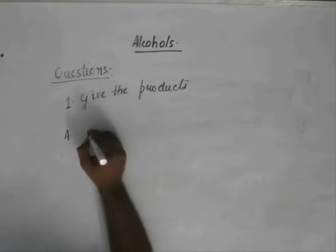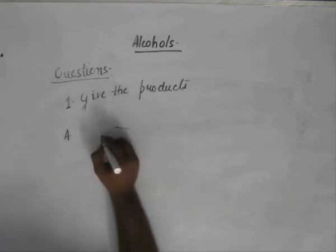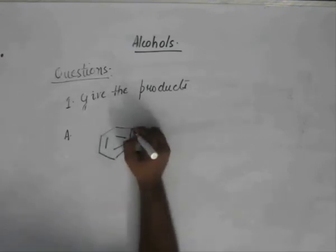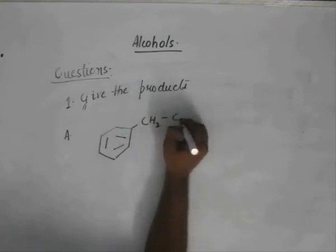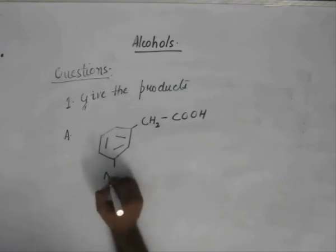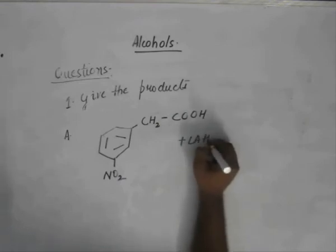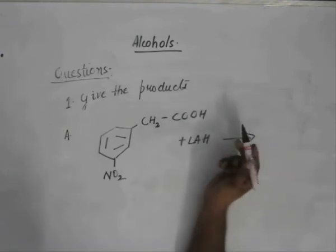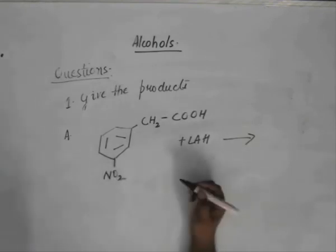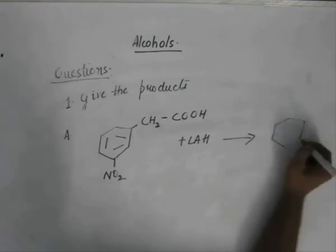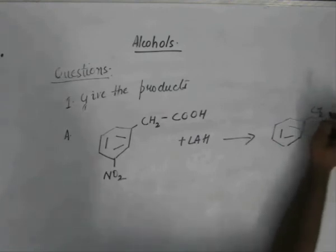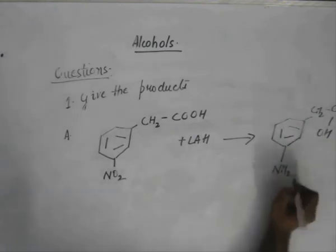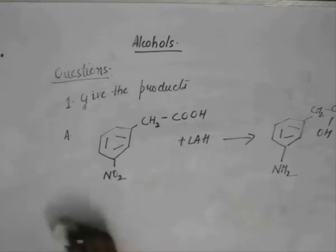Moving on to the next question. Lithium aluminum hydride being a very strong reducing agent reduces COOH group to the corresponding alcohol and this nitro group to the corresponding amine. So we have CH2-CH2-OH and NH2. This is what lithium aluminum hydride does.